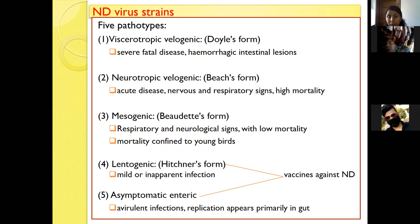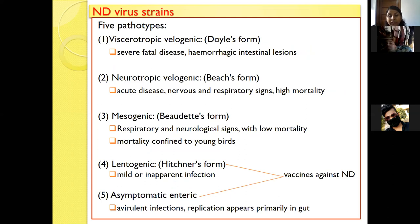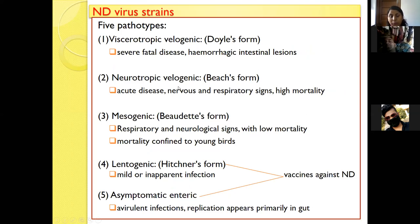According to the disease conditions produced, Newcastle disease virus is divided into five pathotypes: viscerotropic velogenic, neurotropic velogenic, mesogenic, lentogenic, and asymptomatic enteric. The velogenic strain is considered the most virulent. Viscerotropic denotes hemorrhagic intestinal lesions, whereas the neurotropic velogenic strain causes mainly nervous and respiratory symptoms. The mesogenic strain causes respiratory and neurological symptoms but with very low mortality, generally confined to young birds.